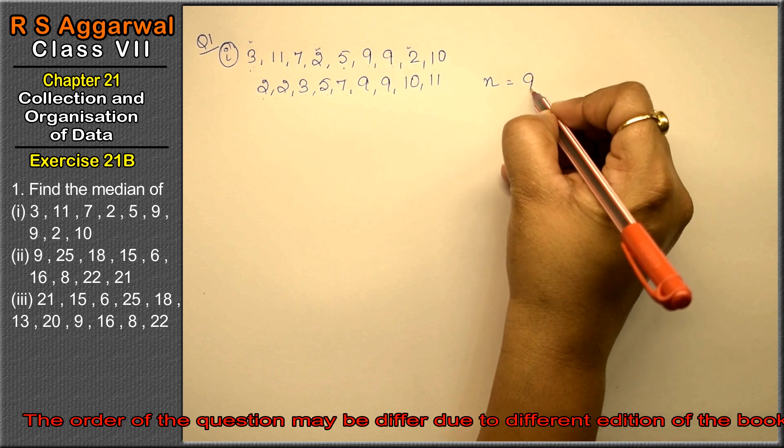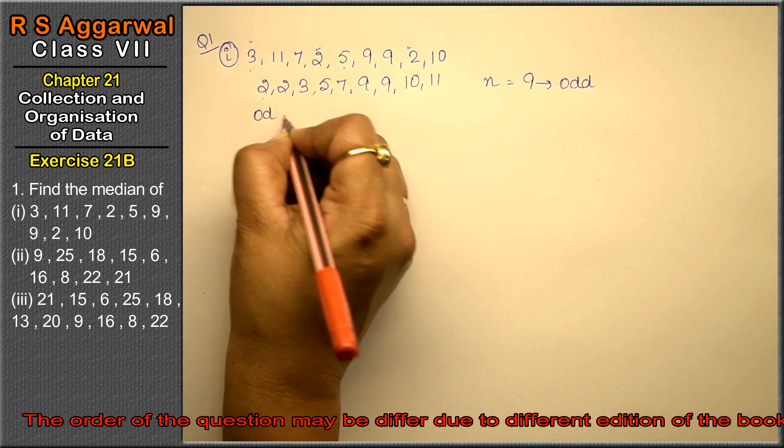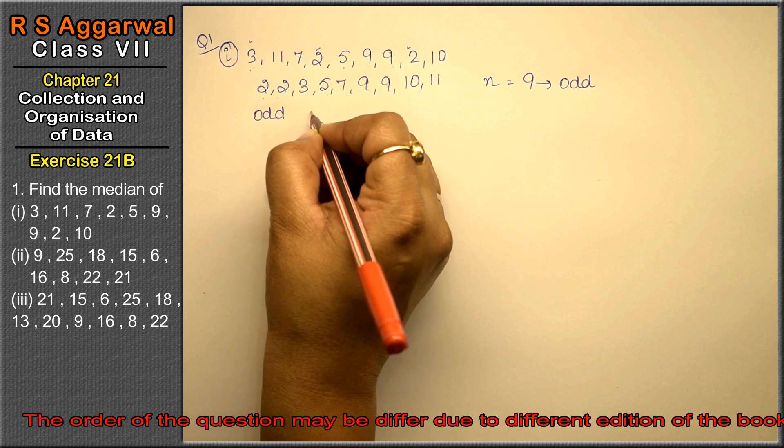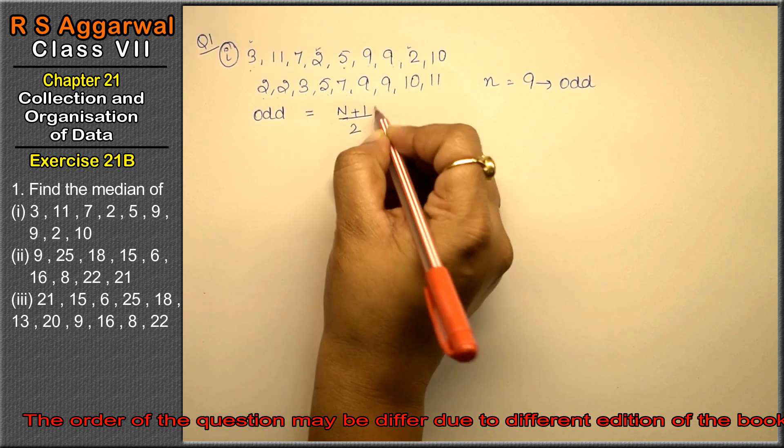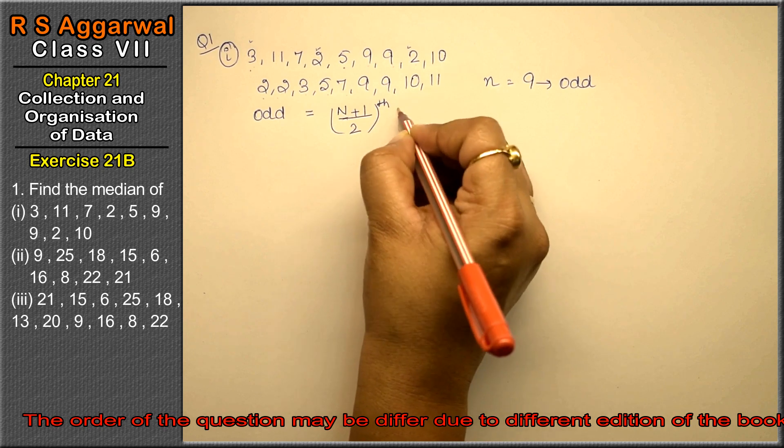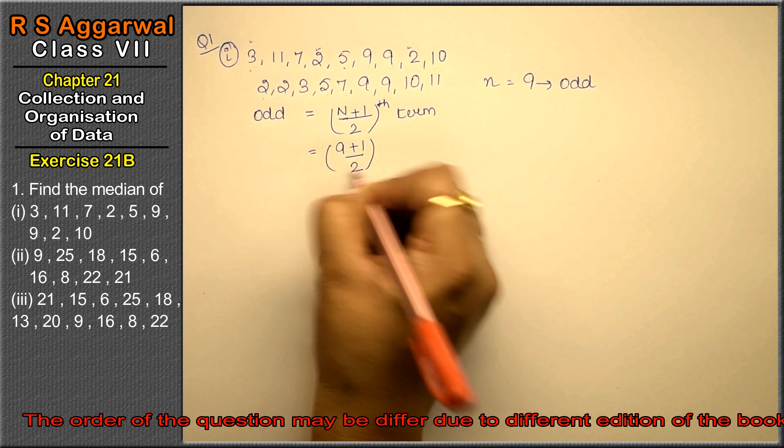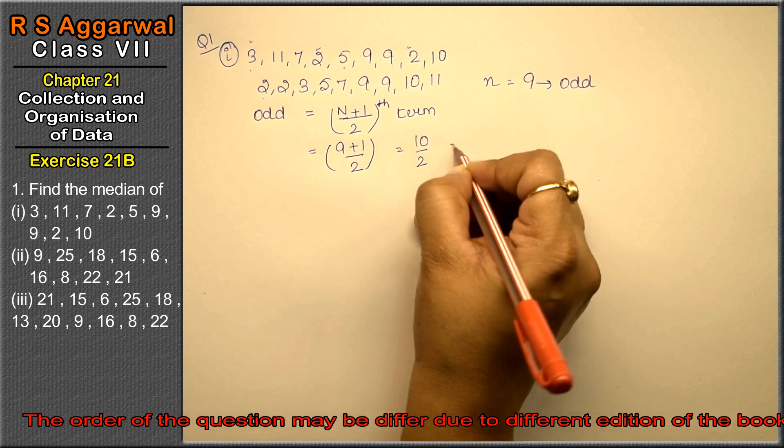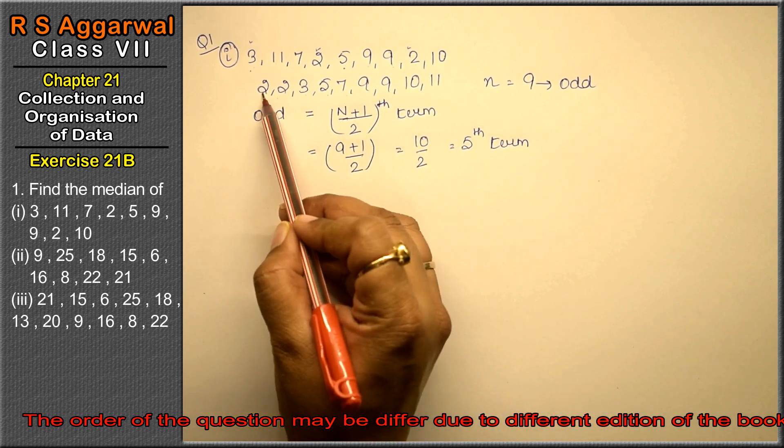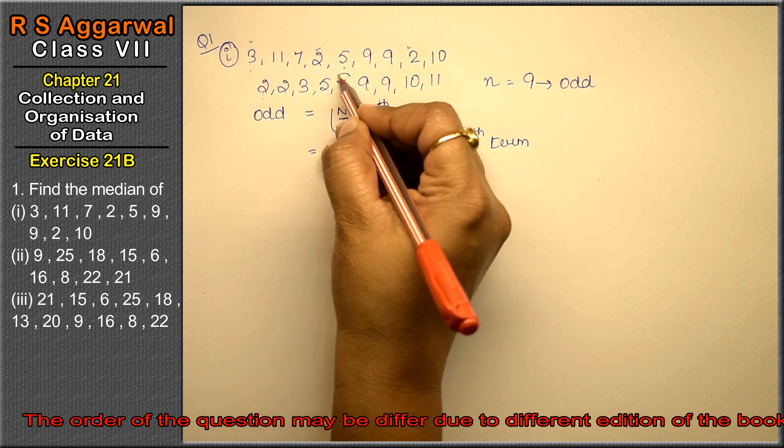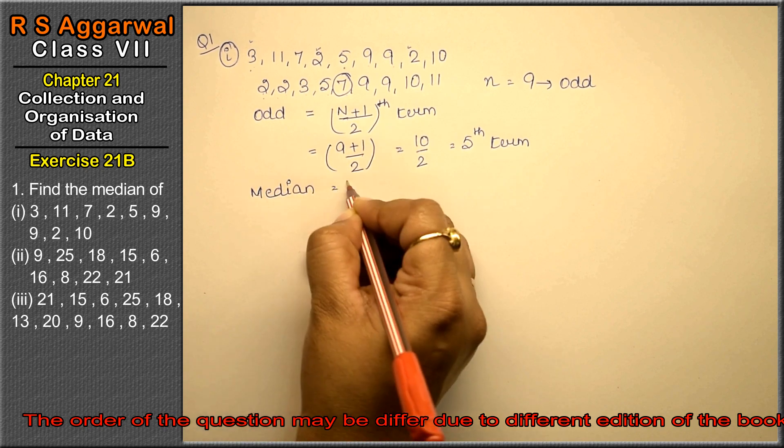Now we need to know if this is even or odd. This is odd number. So we will put a formula in the odd case. The odd case is equal to n plus 1 upon 2th term. What was n? 9 plus 1 upon 2. So this is 10 upon 2, that means 5th term. What is 5th term? 1, 2, 3, 4, and 5. So median equals to 7 is the answer.